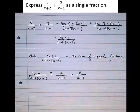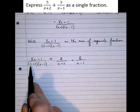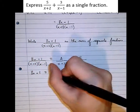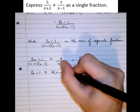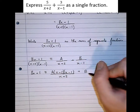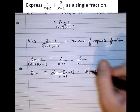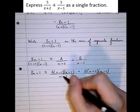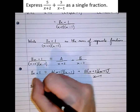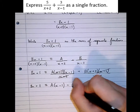Let's call the unknown numerators A and B. The purpose is to find out what A and B actually are. We multiply both sides by the denominator (x + 2)(x − 1). The (x + 2) cancels with the first term and the (x − 1) cancels with the second, leaving us with: 8x + 1 is identically equal to A(x − 1) + B(x + 2).